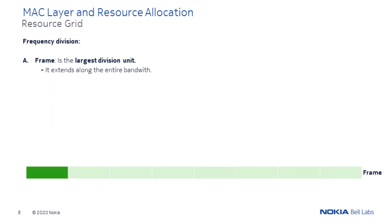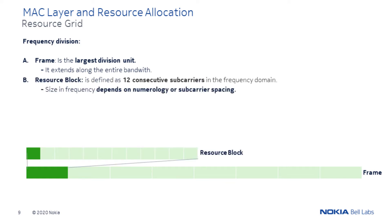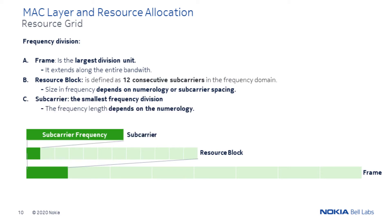Let's first analyze the frequency bandwidth division. First, we have the frame, which is the largest division unit extending along the entire bandwidth. The frame contains a set of contiguous resource blocks. Each resource block is built with 12 consecutive sub-carriers in the frequency domain. These sub-carriers are the smallest frequency division. Their size in frequency depends on the numerology and sub-carrier spacing. Consequently, the size of the resource block also depends on the sub-carrier spacing.